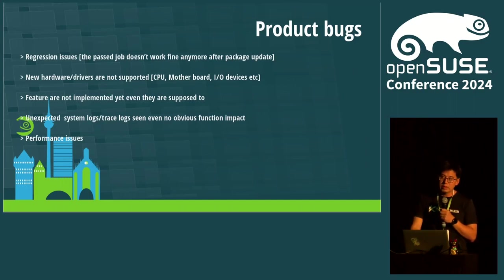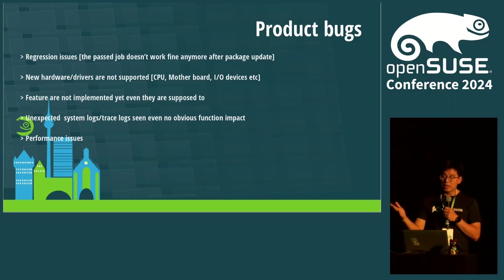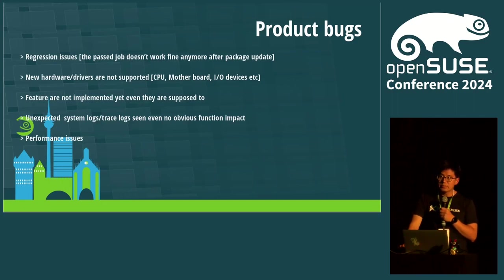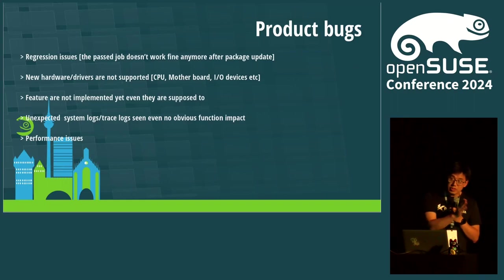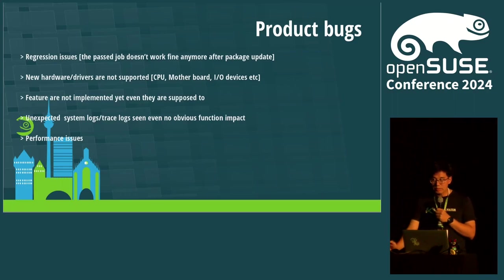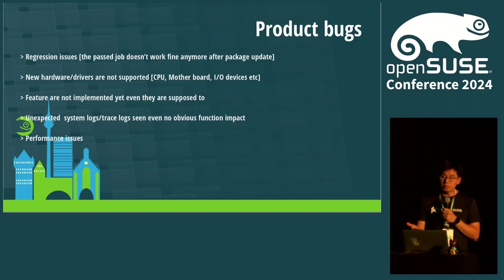For product bugs, we usually see some issues with our product. If we hit some issues, we usually treat them as product bugs, or maybe some packages are having problems. In general, we have some regression bugs - for example, the test passed yesterday, but today the same test failed. So we should try to find some packages updating, some kernel packages updating, or even some patterns or libraries that were upgraded. When downgrading the package to the previous kernel and the same test passed, it should be a product bug.